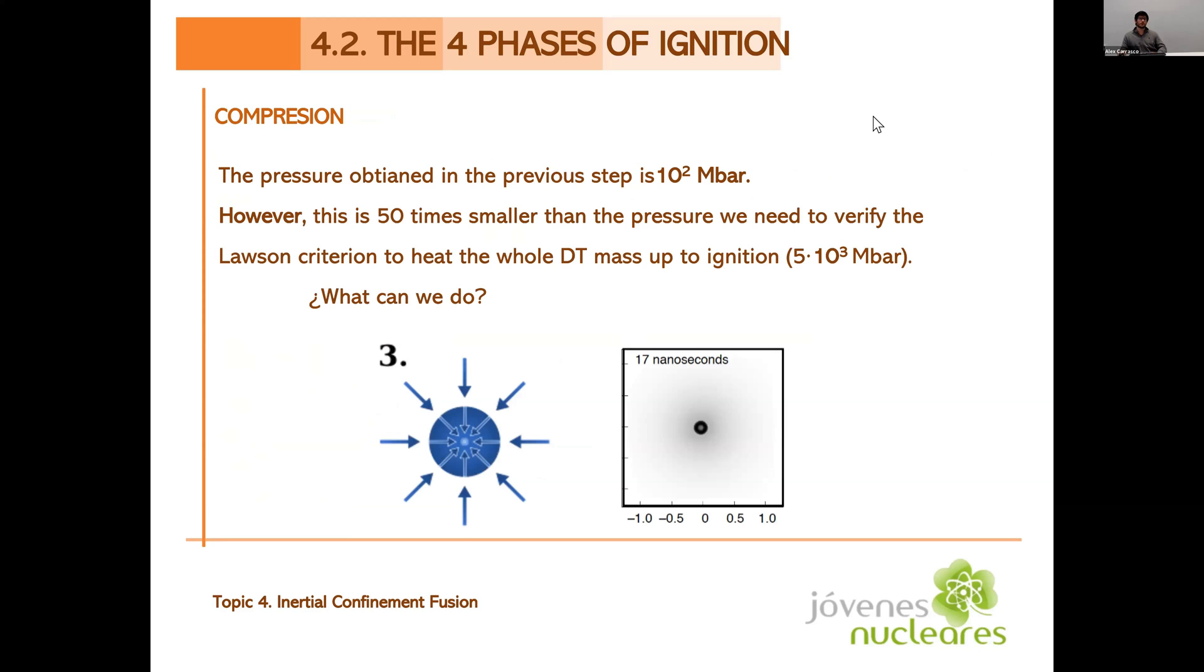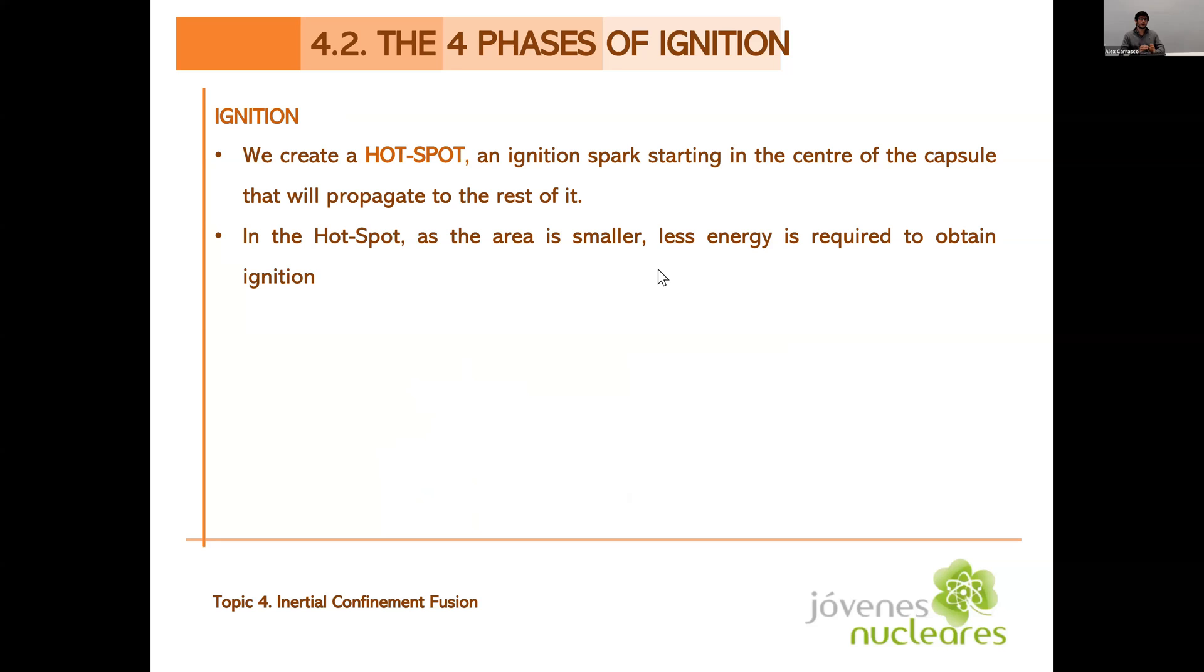However, what is the problem? That with the lasers that we have nowadays, we can only obtain in this way a pressure of 10 to the 2 megabars. This pressure is 50 times less than what we said we needed in the Lawson criterion. So we have a problem here. What can we do? Well, the solution is to create a hotspot in the center of the fuel capsule. This means that we try to get ignition only in the small center of the capsule, and not in the whole capsule at the same time. This is like a spark that starts in the center and propagates to the rest of the capsule. In this way, we need much less energy because the ignition happens only at a very, very small place at the same time.